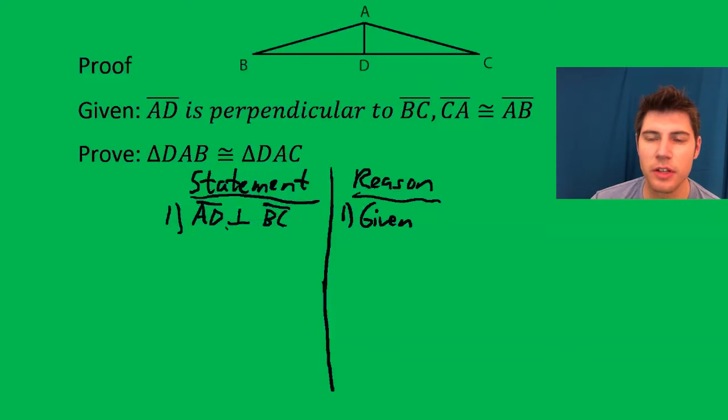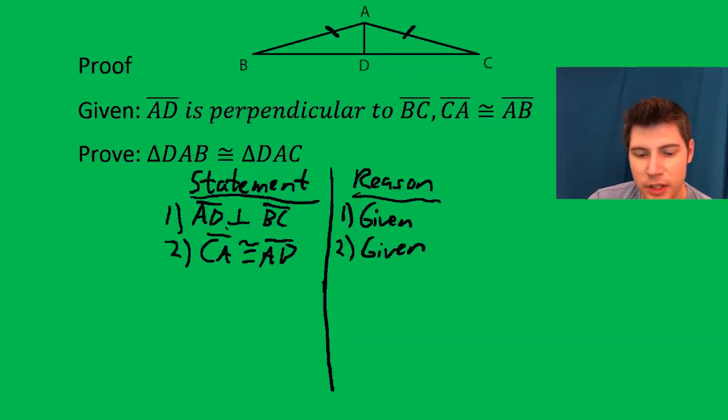The second step is going to be this other given. CA is congruent to AB. So that means these two things are congruent right here on the diagram. And the reason once again is given. So off to the right-hand side here, I like to leave a little note for myself, a little S telling me that I have a side dealt with here.